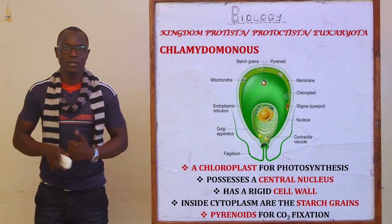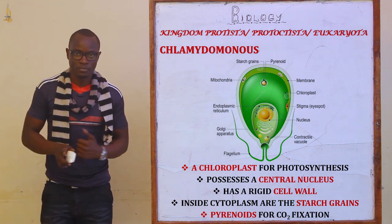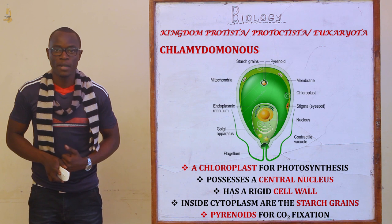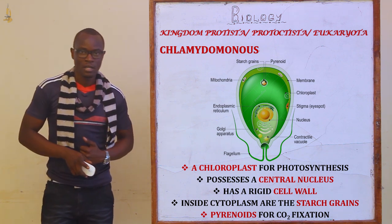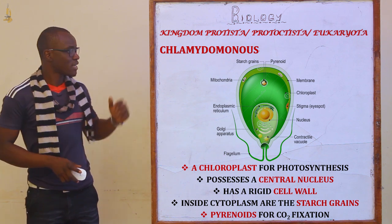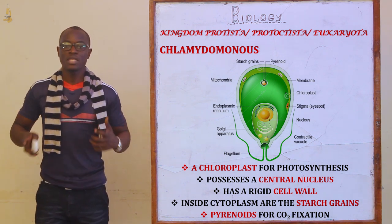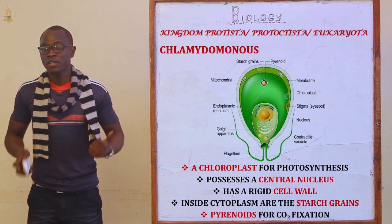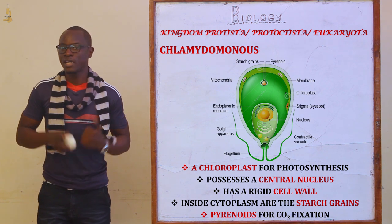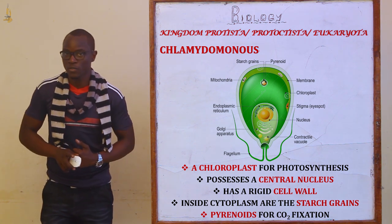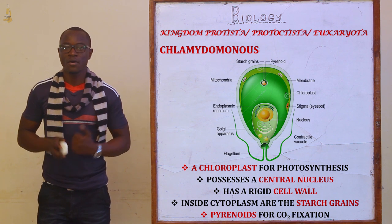It also has a central nucleus and it also possesses a cell wall. Inside the cytoplasm, you will also notice it contains starch grains. Apart from the starch grains, it has structures which are referred to as pyrenoids. The function of these pyrenoids is that they trap carbon dioxide for the dark stage of photosynthesis to manufacture starch.